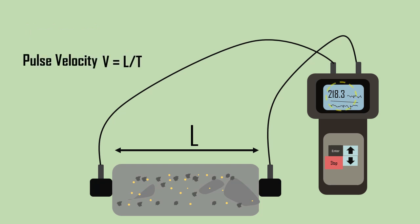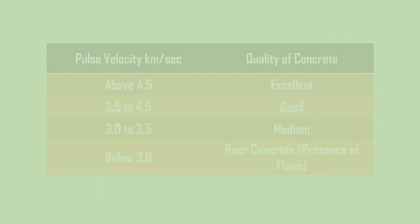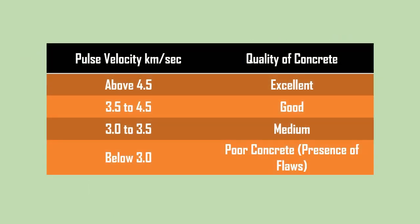The pulse velocity V is given by V equals L divided by T. Based on the velocity, the quality of concrete is identified with the help of the table shown on the screen.